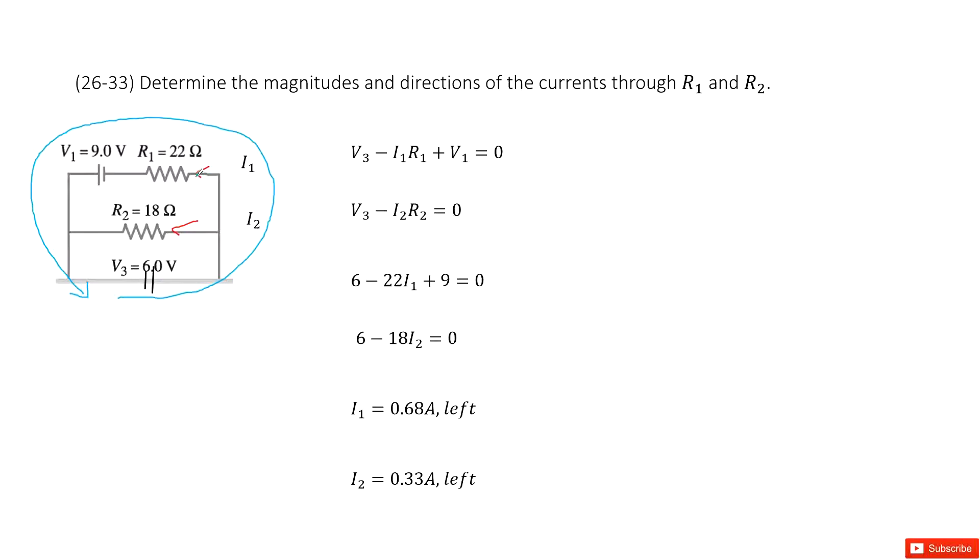And then this current goes through the resistor R1, making the voltage decrease. So minus I1 times R1, and then plus the second battery V1.